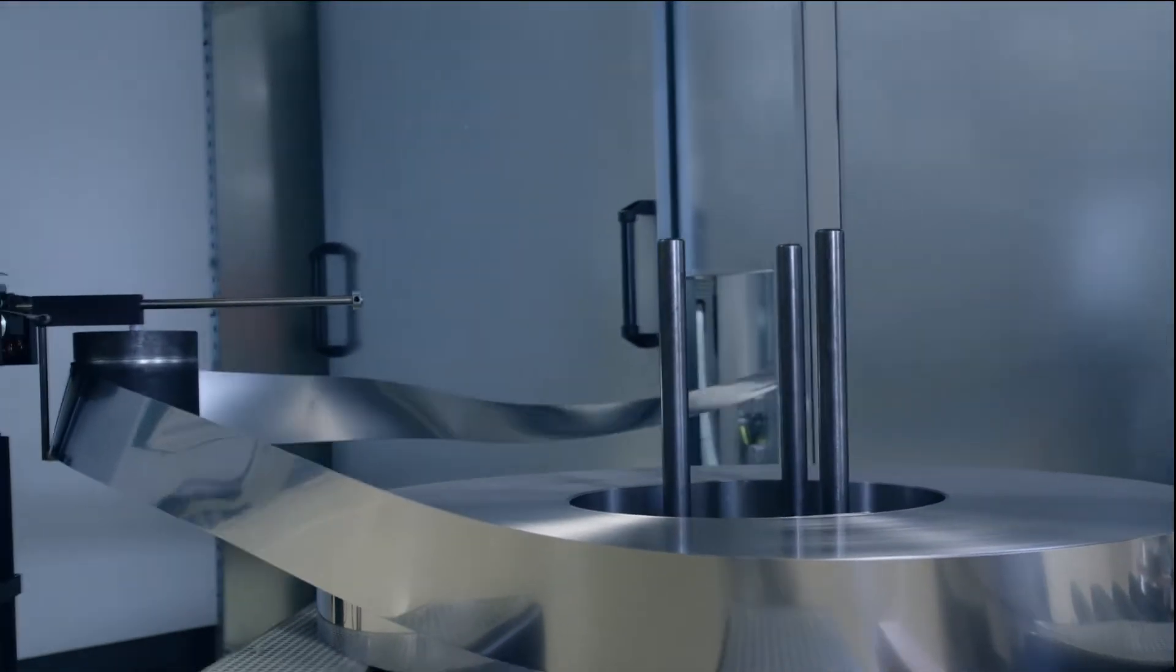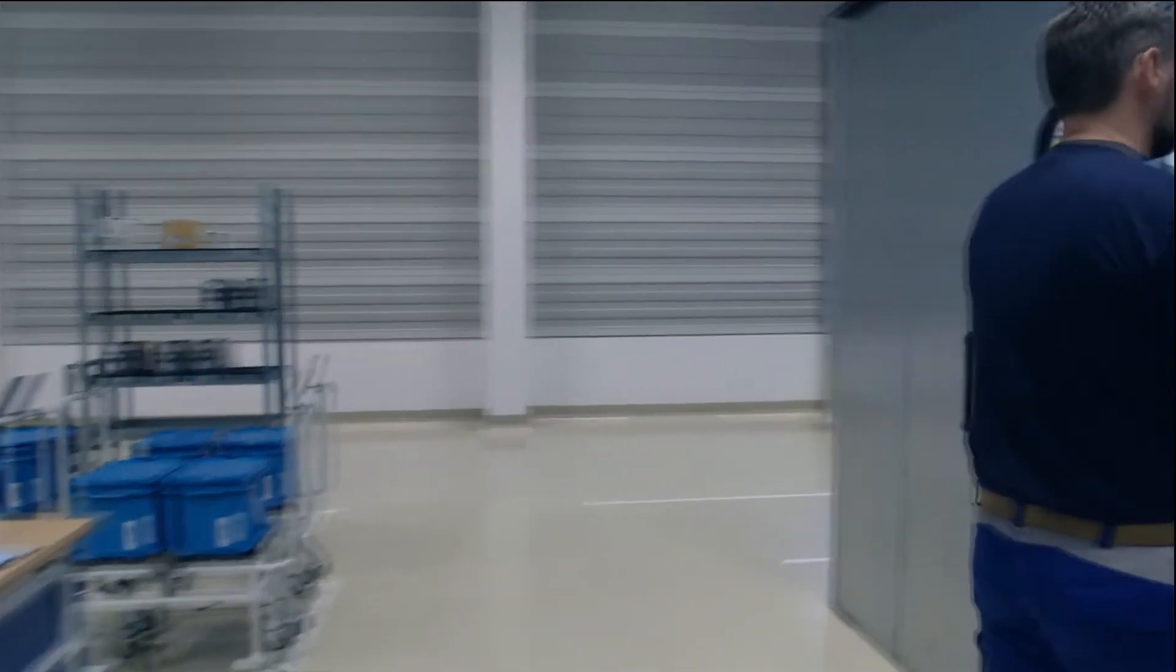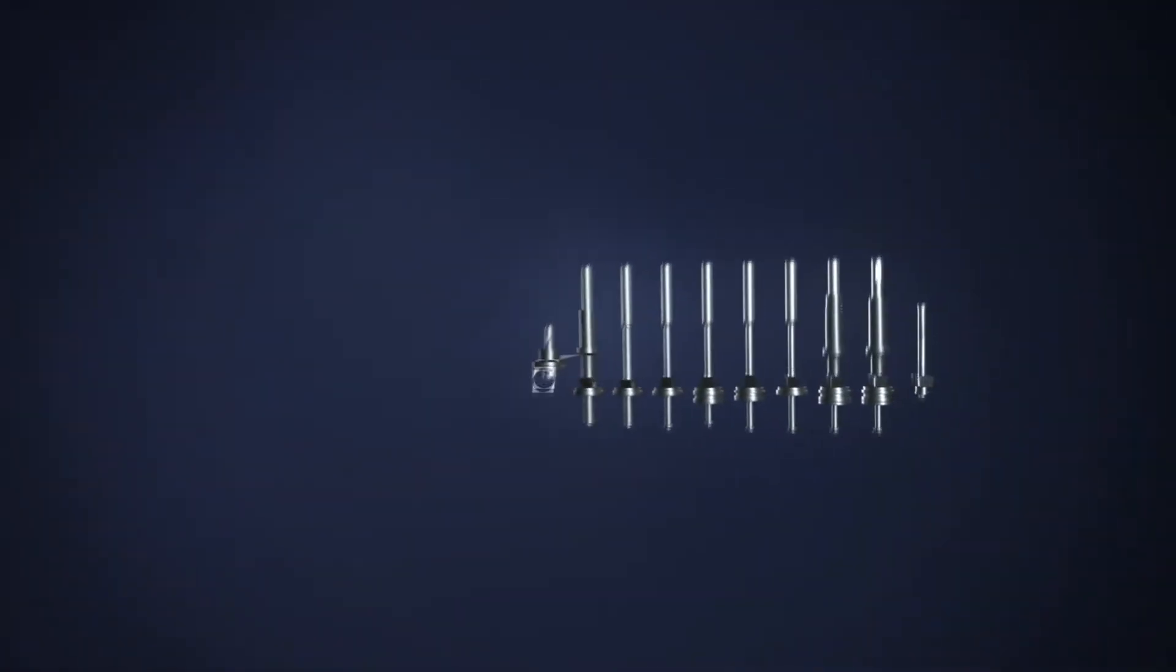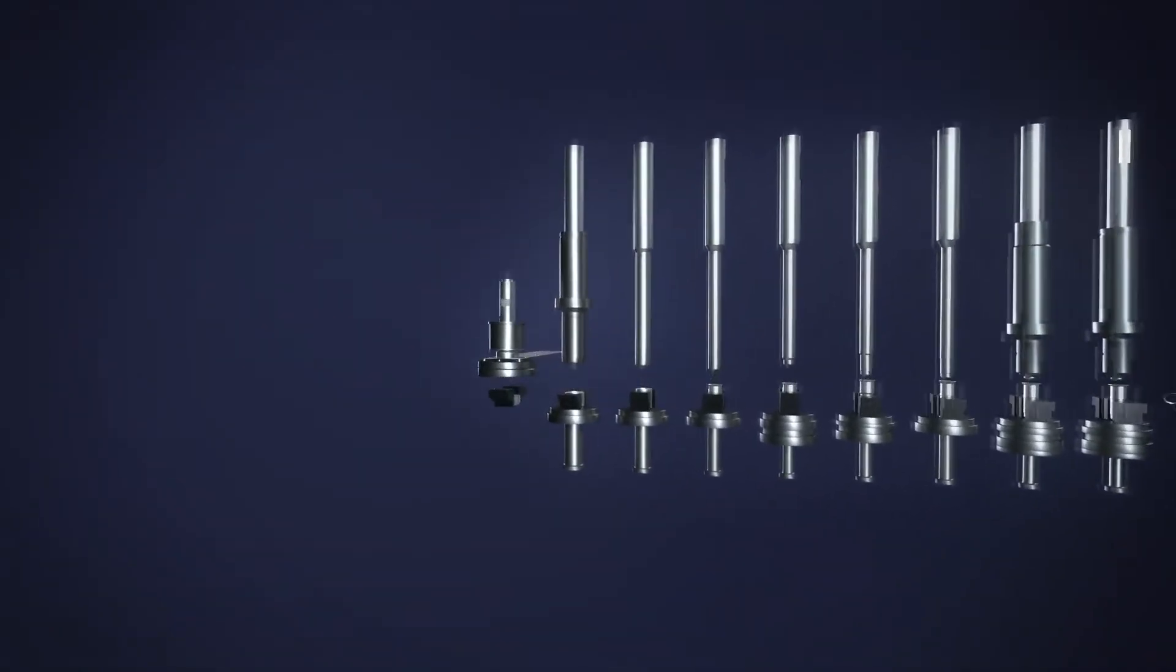The strip is unwound and fed into the deep-drawn press. Stuken uses transfer presses and automatic stamping machines with progressive die technology. Our in-house tool and press shop ensure that all components are perfectly tailored to production requirements.